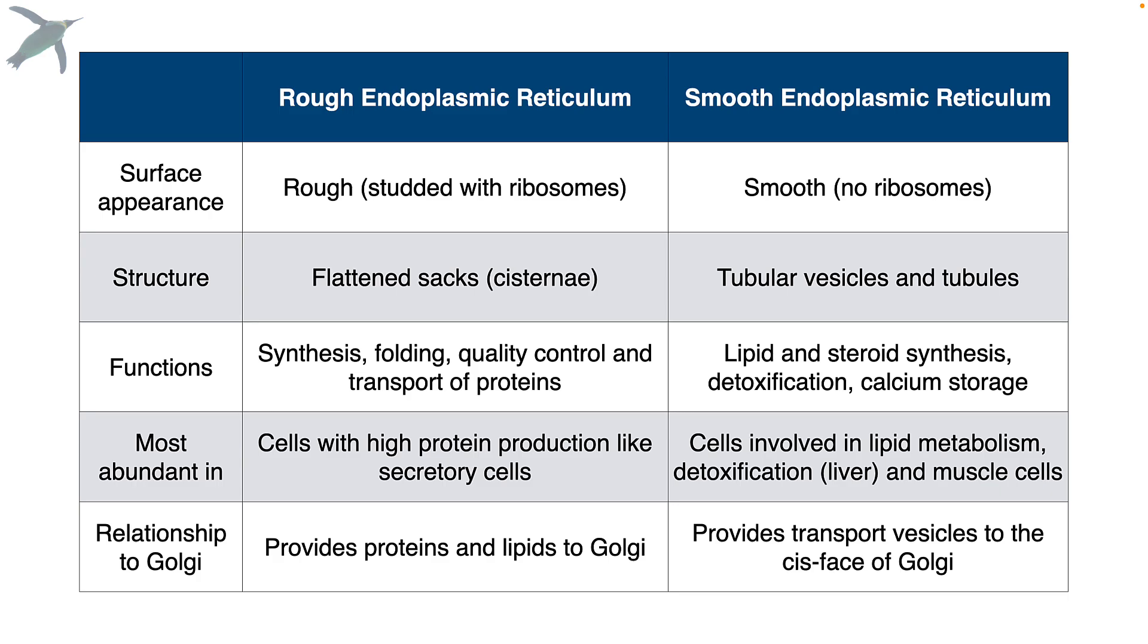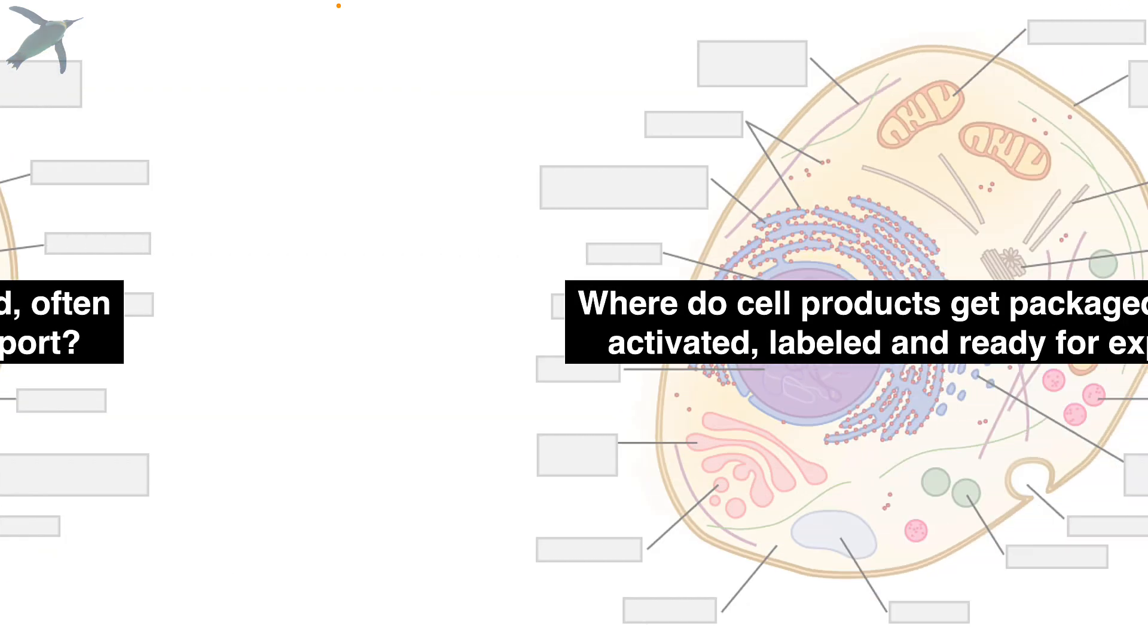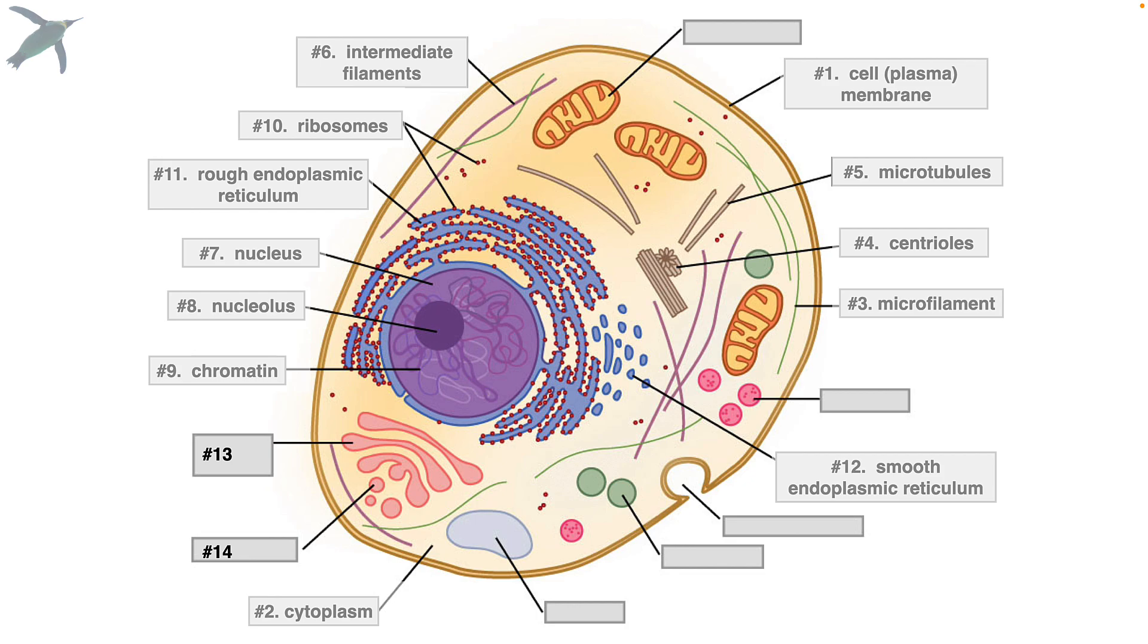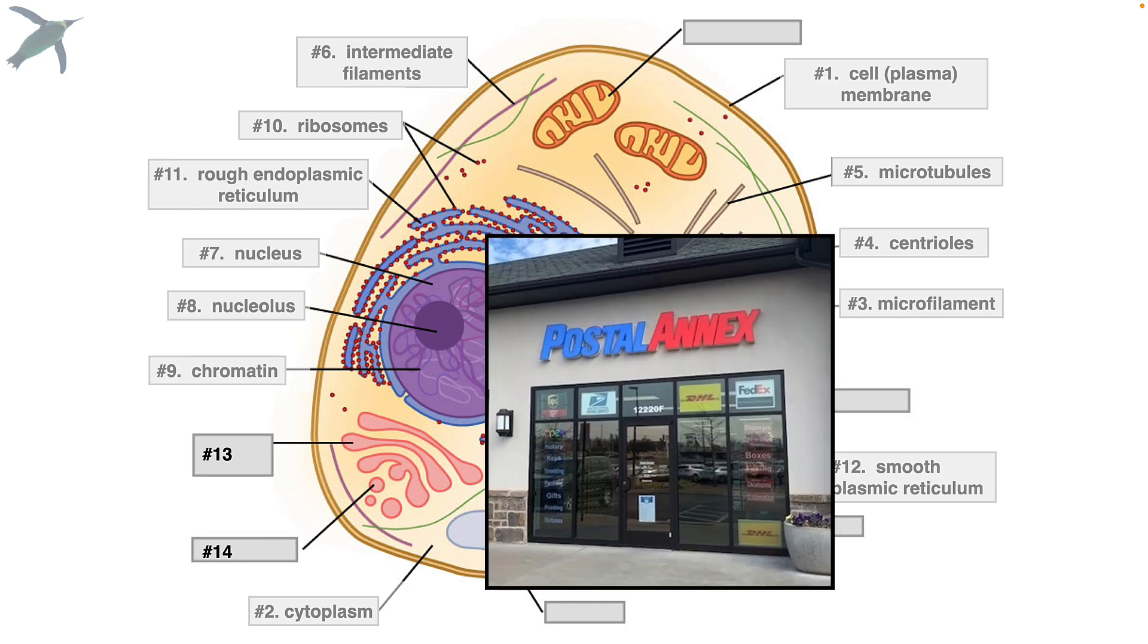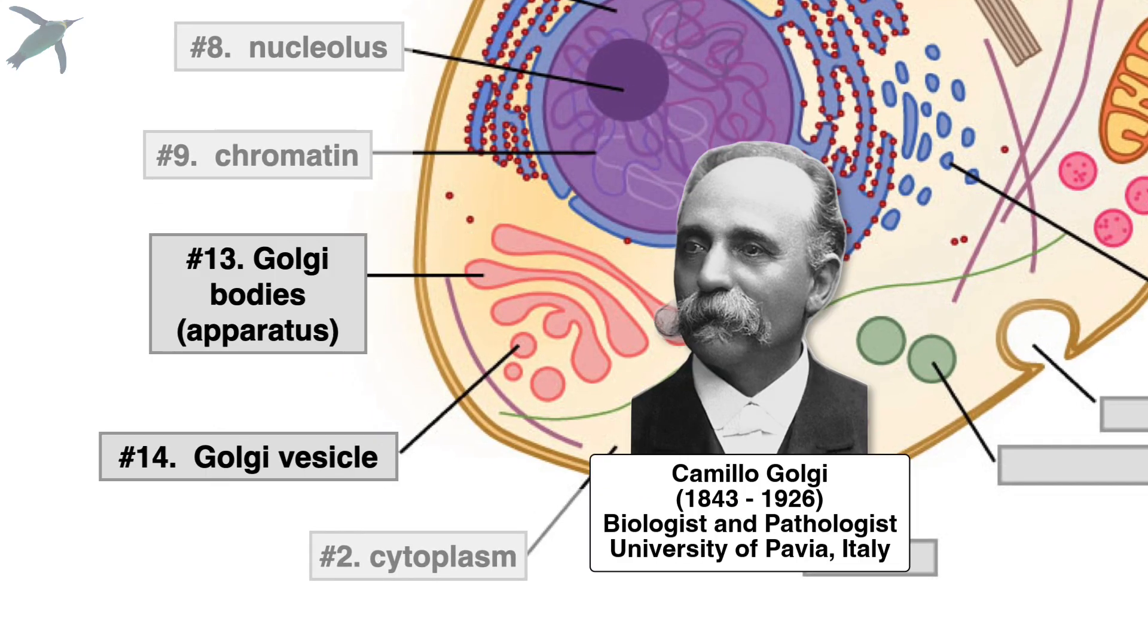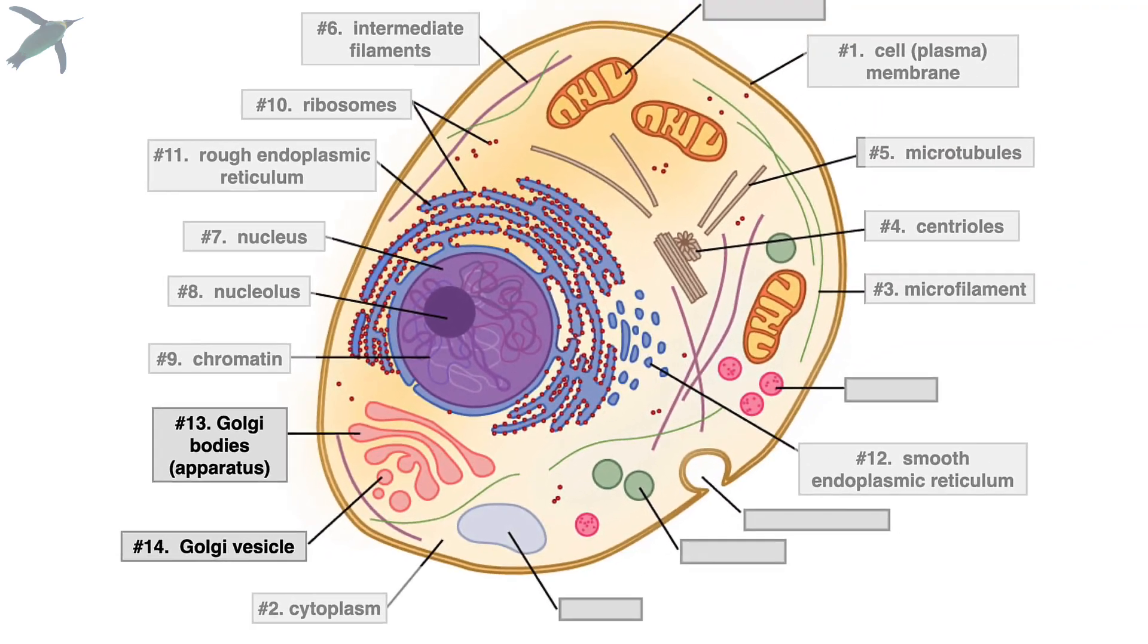Relationship to Golgi, I'm going to show you in just a second. So where do the cell products get packaged? Often they get activated, labeled, and prepared for export. People teach it as the postal annex or the Amazon distribution center of the cells. Number 13, do you recognize those? Yeah, those are called Golgi bodies or the Golgi apparatus. And number 14, these are pinched off portions of Golgi called Golgi vesicles.